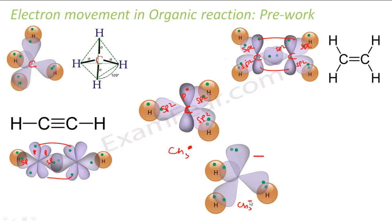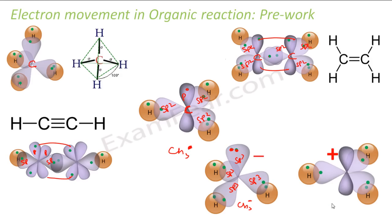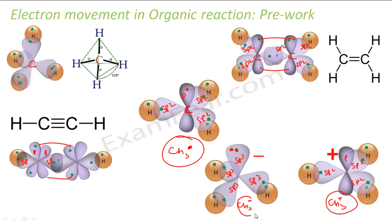The moment we talk about CH3 minus, these are sp3 hybrid orbitals. Three are linked to hydrogen and the other sp3 hybrid orbital will have two electrons. And CH3 plus is also sp2 hybridized. There is a p orbital here — this is an empty p orbital.